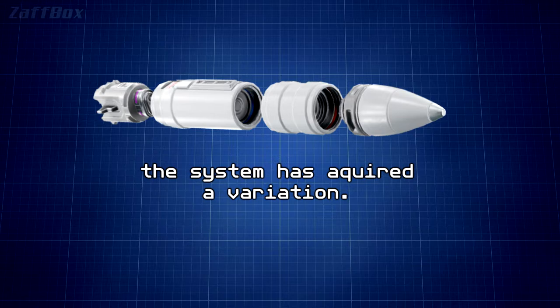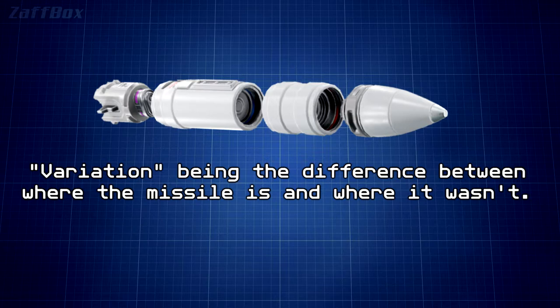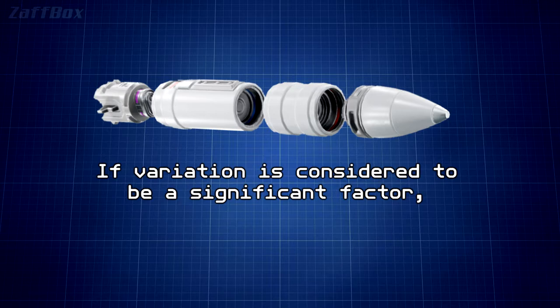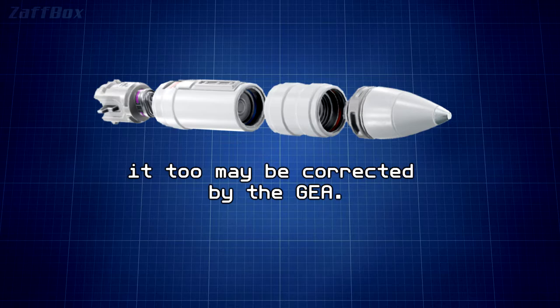not the position that it wasn't, the system has acquired variation. Variation being the difference between where the missile is and where it wasn't. If variation is considered to be